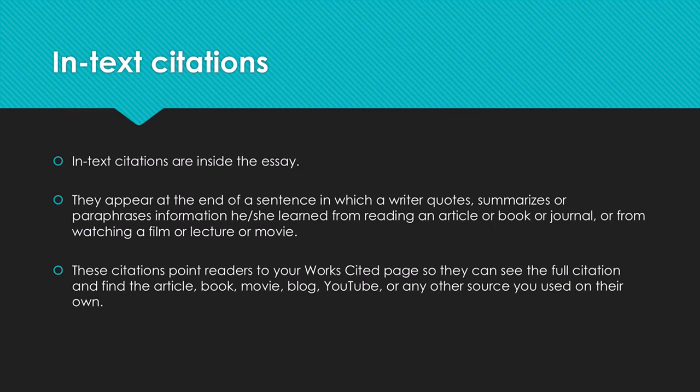There are two ways you see MLA citations in your paper. First, you see them as in-text citations, and they appear at the end of sentences in which a writer directly quotes, summarizes, or paraphrases information learned from reading an article, book, journal, or any source used. Anytime you're using information from a source that's not yourself, you're going to put an in-text citation at the end of that sentence. These citations inside your essay have a big job because they point your readers to the works cited page, where readers will find the full citation.